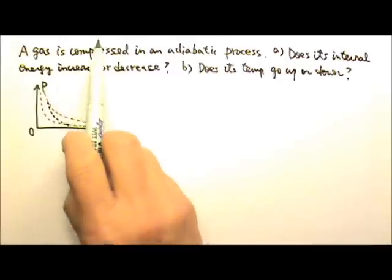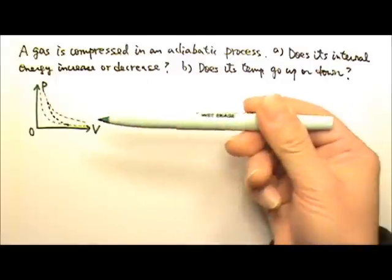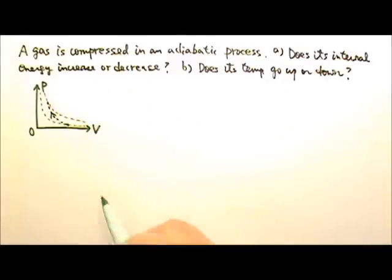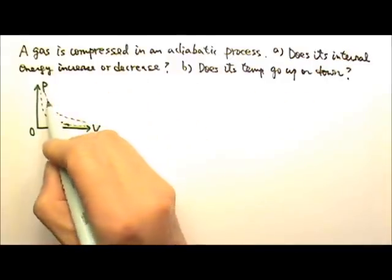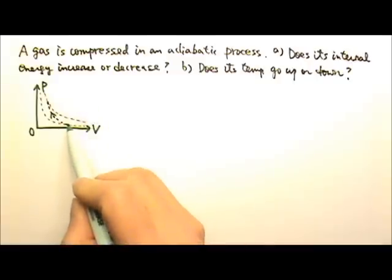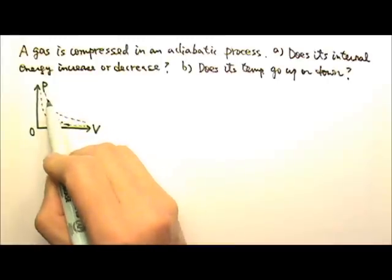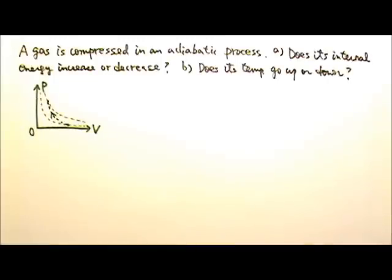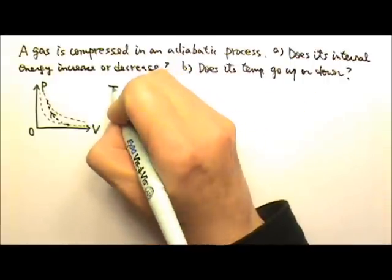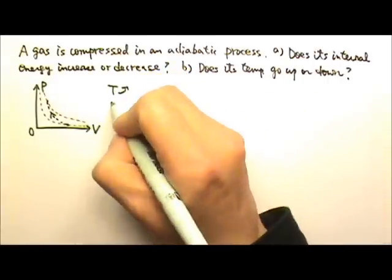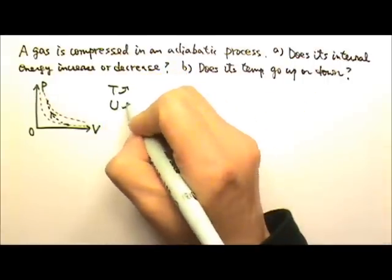And because the gas is compressed, it goes that way. So it follows the curve starting here and then there. So it starts at the lower temperature isothermal curve and ends on a higher temperature. So the temperature goes up, and that means the internal energy increases.